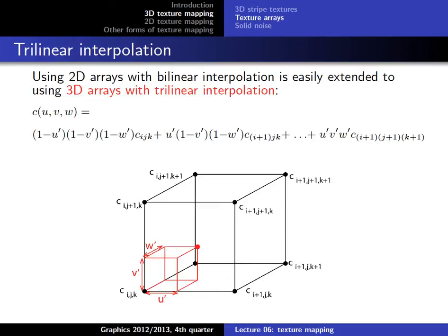The 3D case (trilinear interpolation) works the same way but sums over all eight vertices of a cube instead of four corners of a square. Each vertex gets a weight with a third dimension factor added. The closer the sample point is to a vertex, the more that vertex's color influences the result. The full formula is in the book and, while it looks complex, the structure is identical to the 2D case.